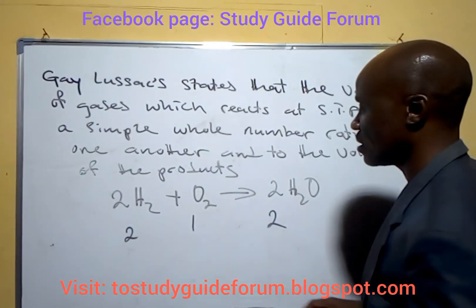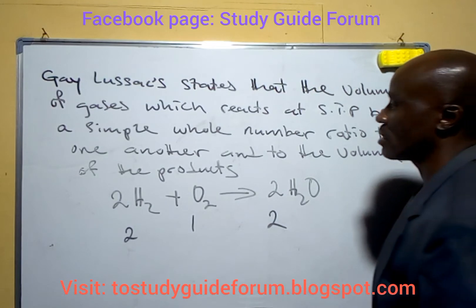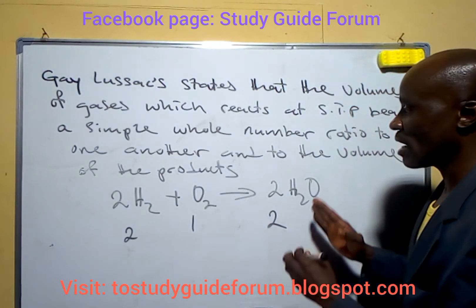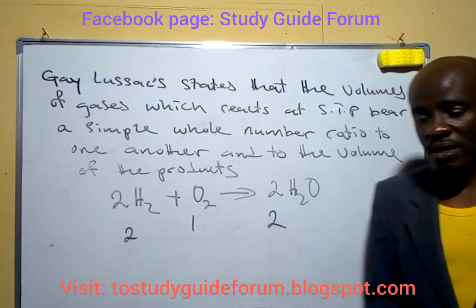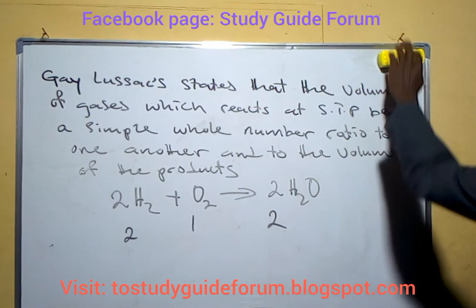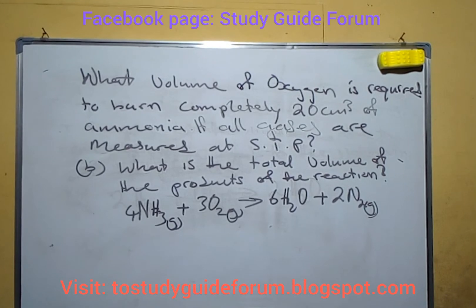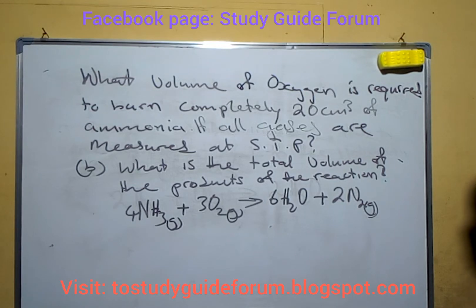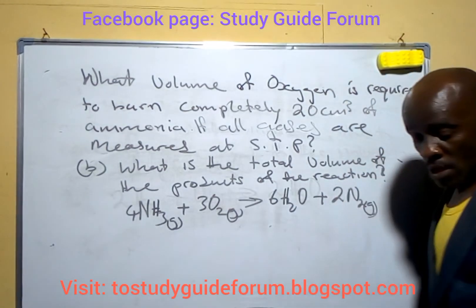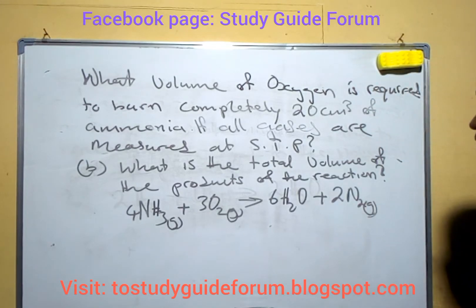Based on that, since there's always a relationship that exists, we're going to take a simple calculation that will help us understand how to use this in solving problems in chemistry. The question says: what volume of oxygen is required to burn completely 20 cm³ of ammonia, if all gases are measured at STP? The second question asks: what is the total volume of the products of the reaction? We have the chemical equation here, and since the reaction is at STP, we apply Gay-Lussac's Law.